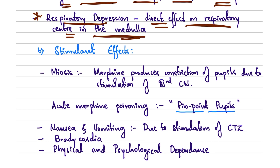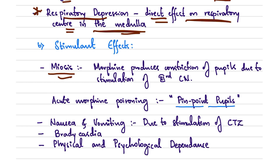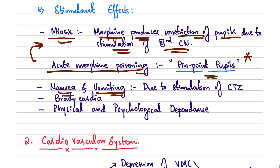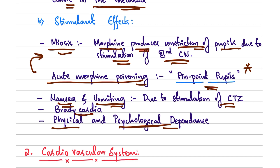Now for the stimulant effects of morphine. First is miosis — morphine produces constriction of the pupils due to stimulation of the third cranial nerve. In acute morphine poisoning, look for pinpoint pupils. It also causes nausea and vomiting due to stimulation of the chemoreceptor trigger zone, bradycardia, and physical and psychological dependence.